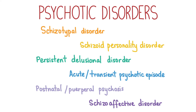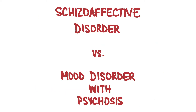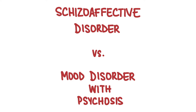Schizoaffective disorder is when both symptoms of schizophrenia and mood disorder are present in the same episode of illness. In mood disorder with psychosis, including depression with psychosis, the mood disorder precedes the psychotic episode. In schizoaffective disorder, they both occur at the same time.